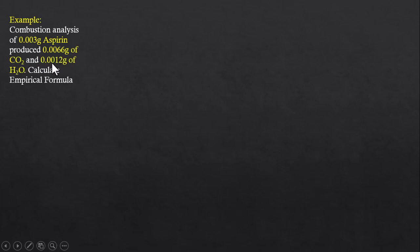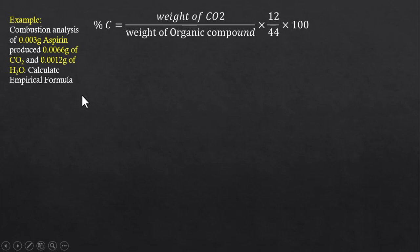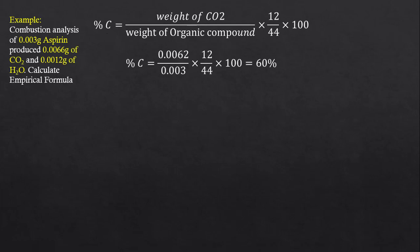As we have already seen, this is the expression used to determine the percentage of carbon. The weight of carbon dioxide produced in the combustion analysis is 0.006 grams, and the weight of aspirin originally burned is 0.003 grams.